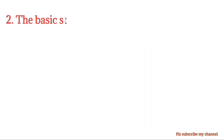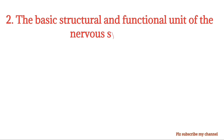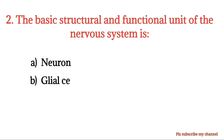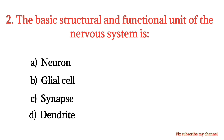MCQ number 2. The basic structural and functional unit of the nervous system is: Option A: Neuron. Option B: Glial cell. Option C: Synapse. Option D: Dendrite. The right option is Option A.